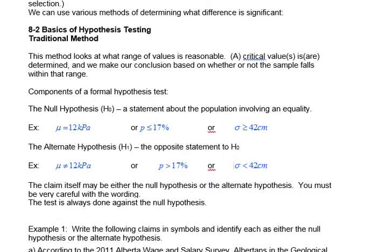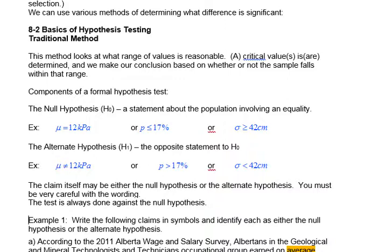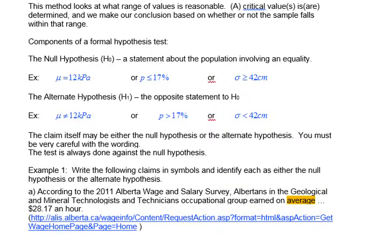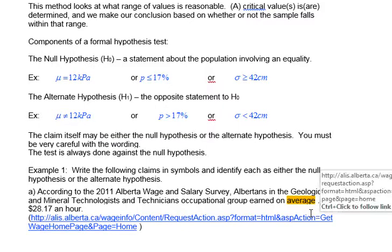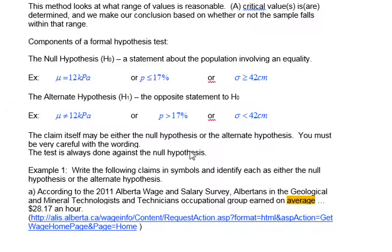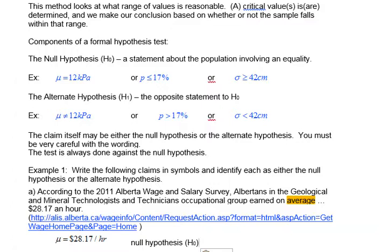The claim we're trying to test could be either the null or the alternate hypothesis. For example, according to the 2011 wage survey, geologists in the geological and mineral technologists and technicians occupational group earned on average $28.17 an hour. The claim is about a mean, and 'earned' implies equality — so symbolically this is the mean equals $28.17 per hour, making it a null hypothesis.